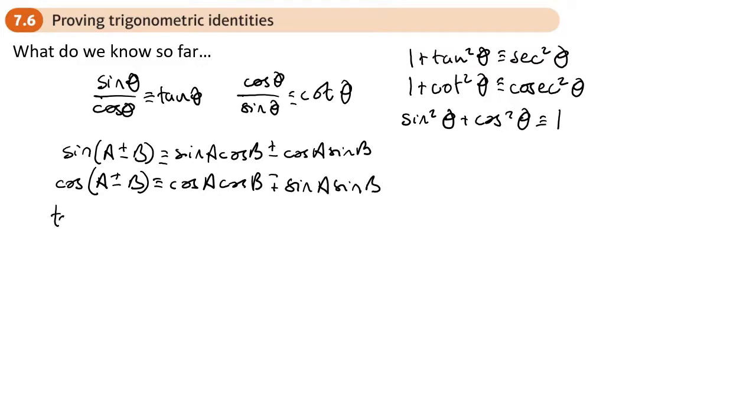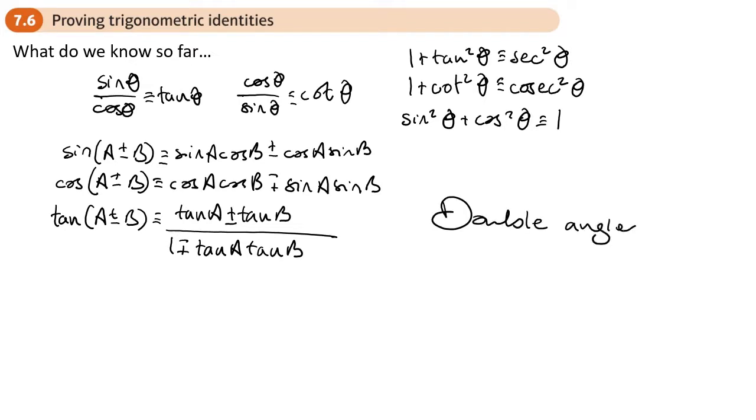Then we've got cos A plus or minus B, cos A cos B minus plus sin A sin B. Then we've got the same for tan. So we're going to have tan A plus tan B all over 1 minus plus tan A times tan B. And then we've also got the double angle as well. I'm not going to write all of those out. We've got those already from previous lessons.